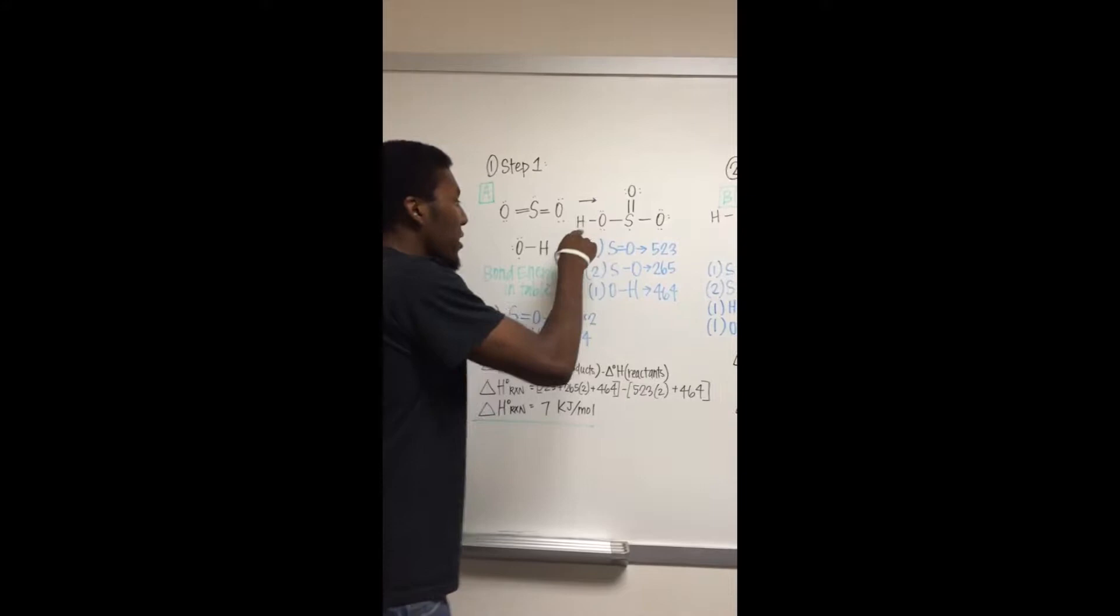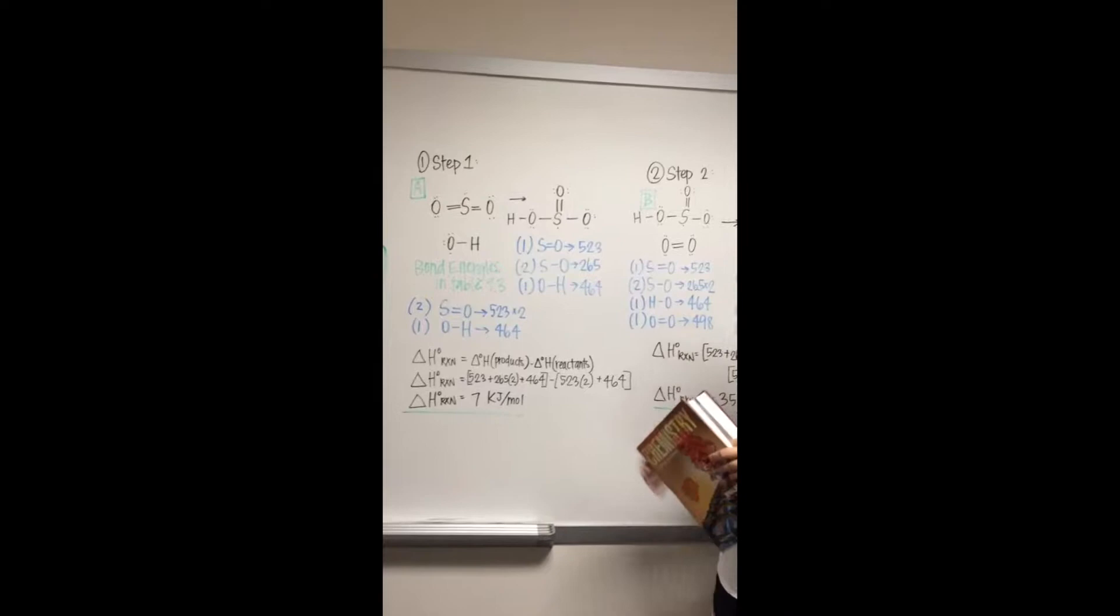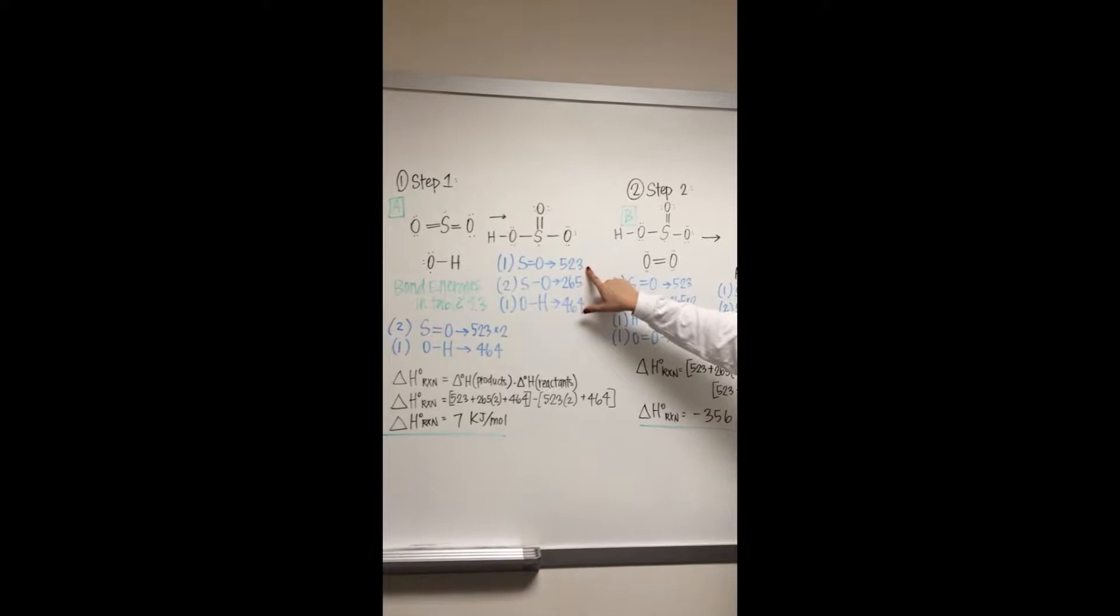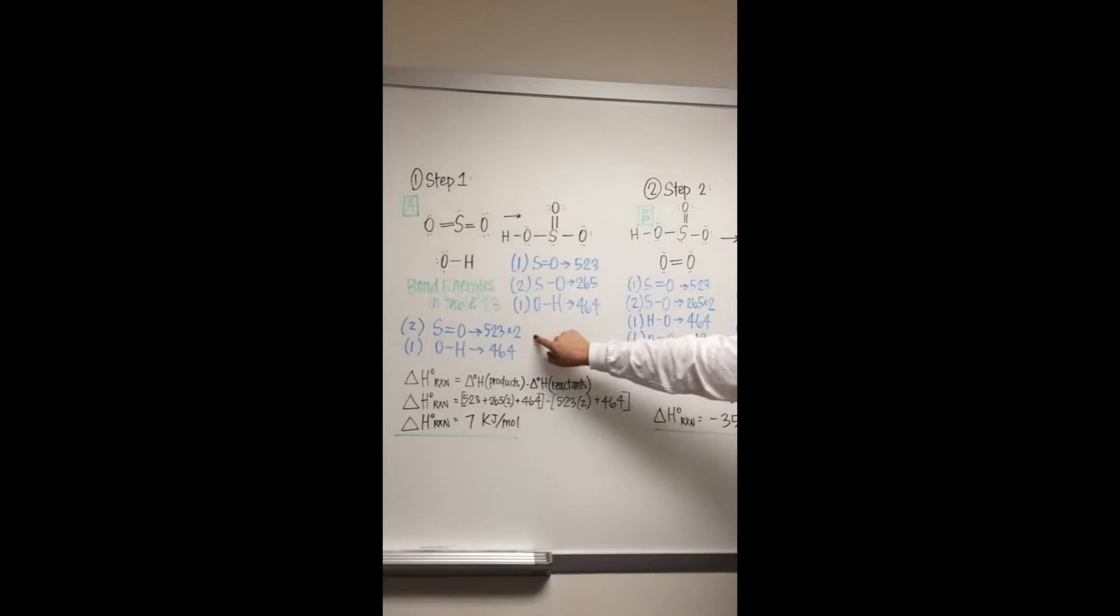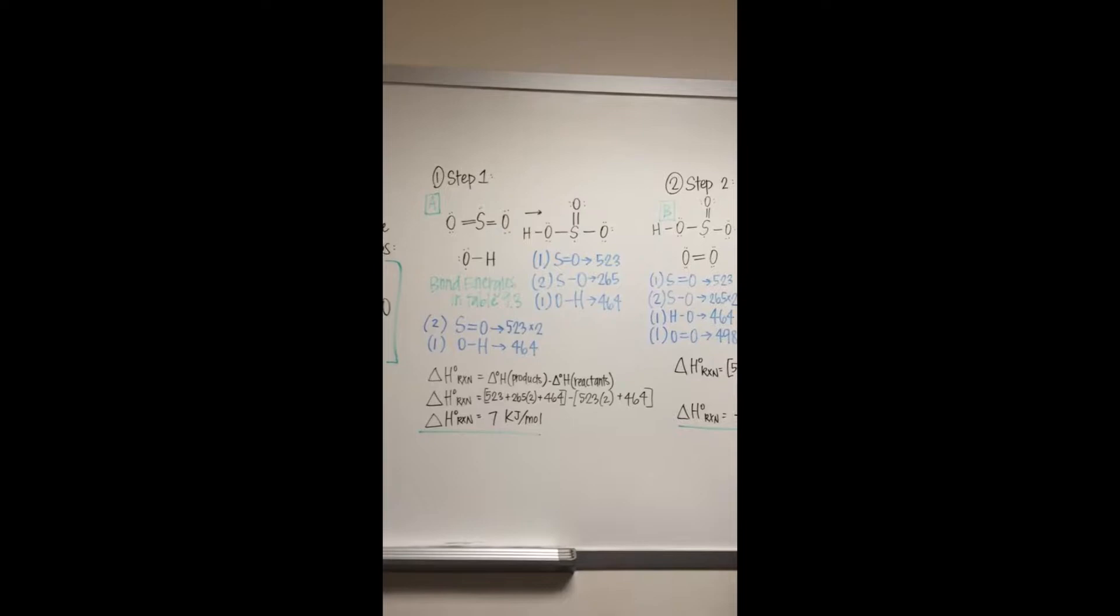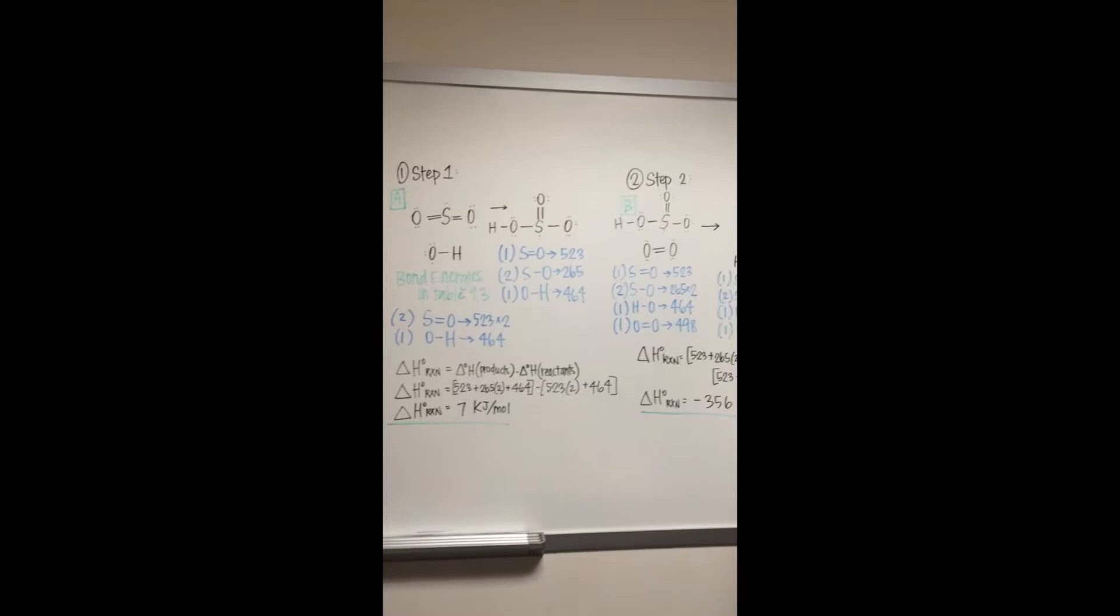Then we go to table 9-3 in chapter 9 and use the bond energies. So we have sulfur double bonded with oxygen is 523 kilojoules per mole, sulfur single bonded with oxygen is 265, and oxygen single bonded with hydrogen is 464. We can use the same steps for the reactants. Then we find the enthalpy change of the reaction by subtracting the reactants from the products, which gives us 7 kilojoules per mole.